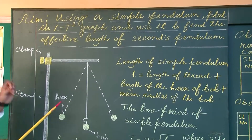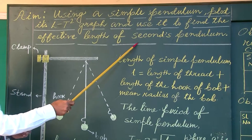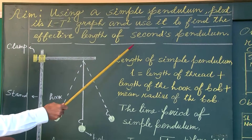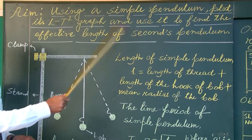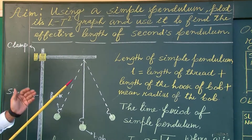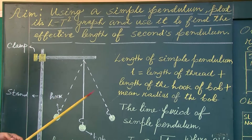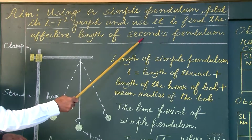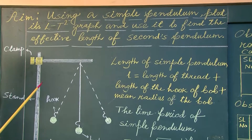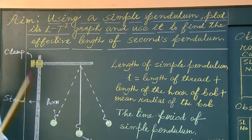First of all we should know what is the meaning of seconds pendulum. It is a pendulum whose time period is just 2 seconds. If the time period of a pendulum is 2 seconds, it is known as seconds pendulum. We are going to find the effective length of a seconds pendulum whose time period is 2 seconds.